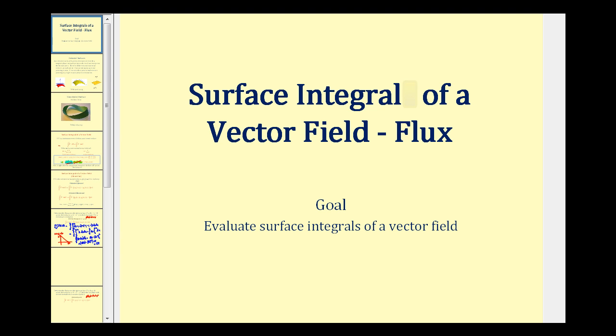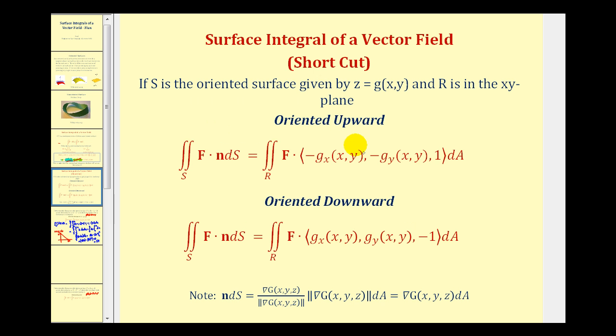Welcome back to part two of surface integrals of a vector field. In part one, we talked about if S is an oriented surface given by z equals g of x and y, and R is in the xy plane, based upon the orientation of the surface affects how we evaluate the surface integral as a double integral over the region R.